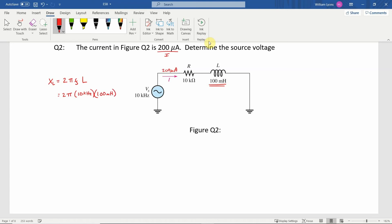So when we calculate that out, we get a resistance of 6.28 kilo ohms.